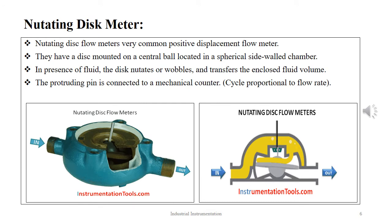The first type of positive displacement flow meter is the nutating disc meter. Nutating disc flow meters are very common positive displacement flow meters. They have a disc mounted on a central ball located in a spherical sidewall chamber. In presence of fluid, the disc nutates or wobbles and transfers the enclosed fluid volume.